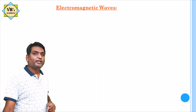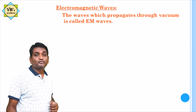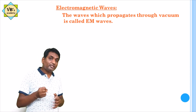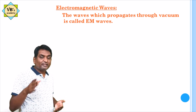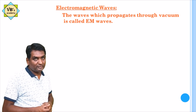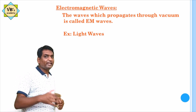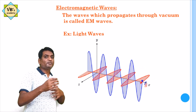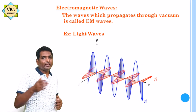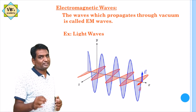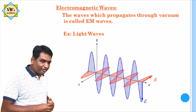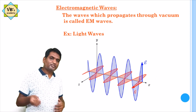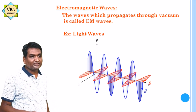Coming to electromagnetic waves — these are waves which transfer through vacuum, meaning they don't require any particles for energy transmission. Without the help of any materialistic medium, if energy is transmitted, such waves are called electromagnetic waves. Examples are light waves. Electromagnetic waves transfer energy through the variation of electric field as well as magnetic field simultaneously. We have a separate chapter on these; just remember that electromagnetic waves do not require any materialistic medium and can travel even through vacuum.